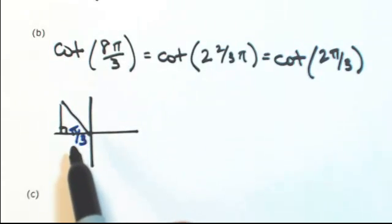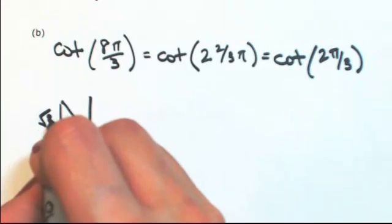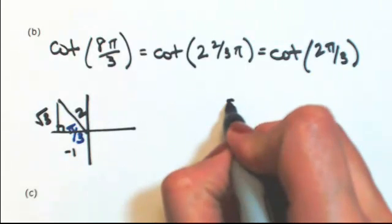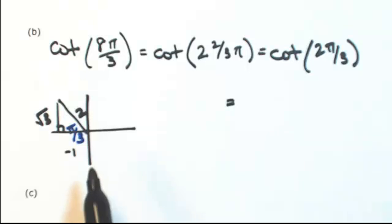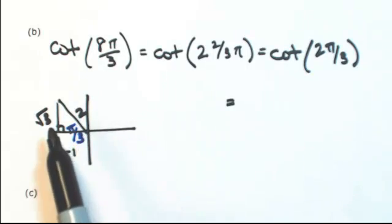So then the adjacent side is going to be, because it's in the second quadrant, negative 1. Opposite would be positive the square root of 3. Hypotenuse is 2. So then cotangent of 2π over 3. Tangent is opposite over adjacent. So then cotangent is adjacent over opposite.